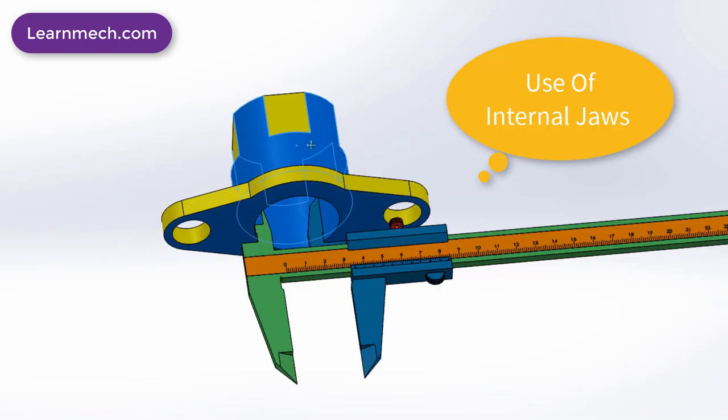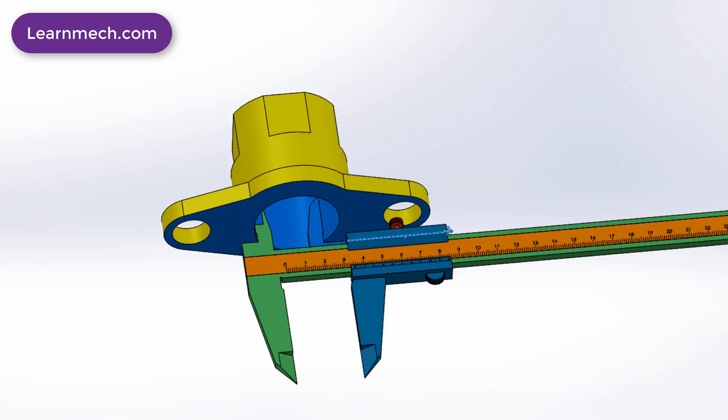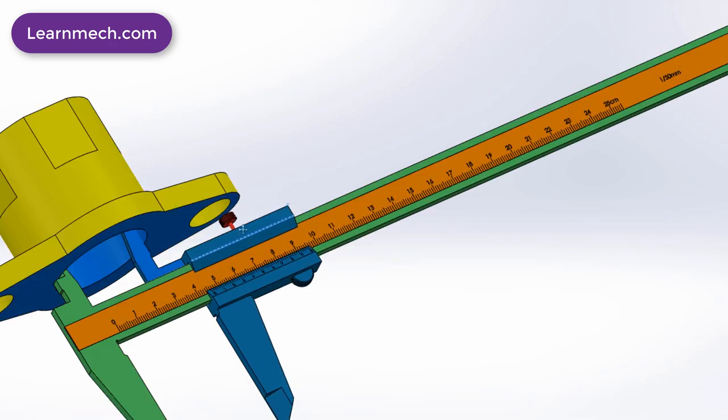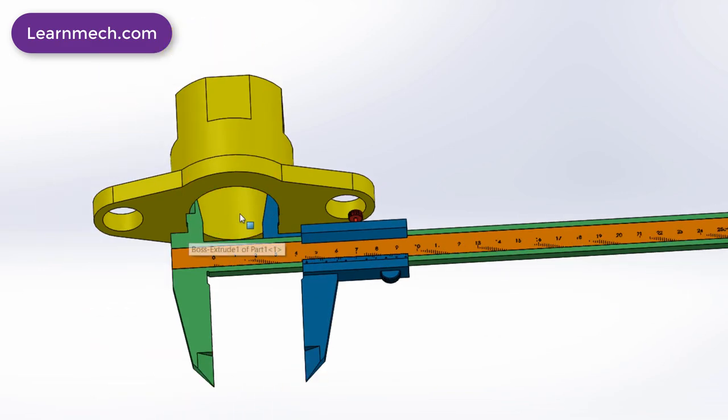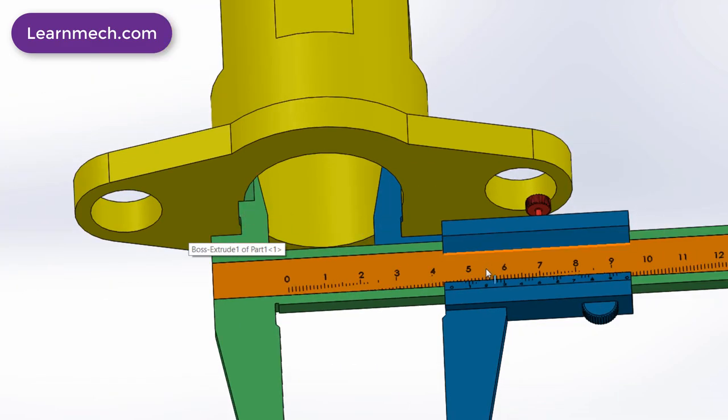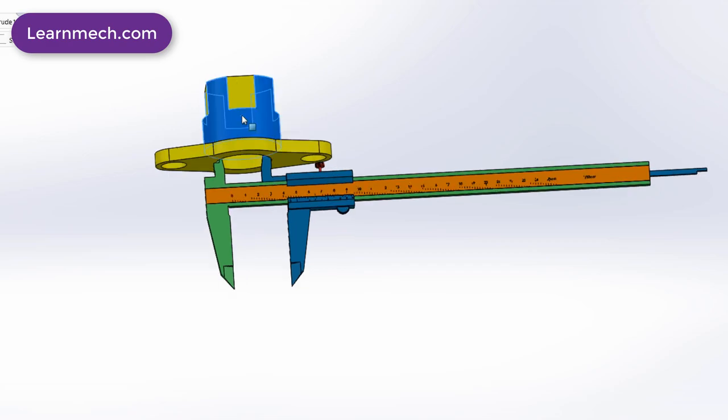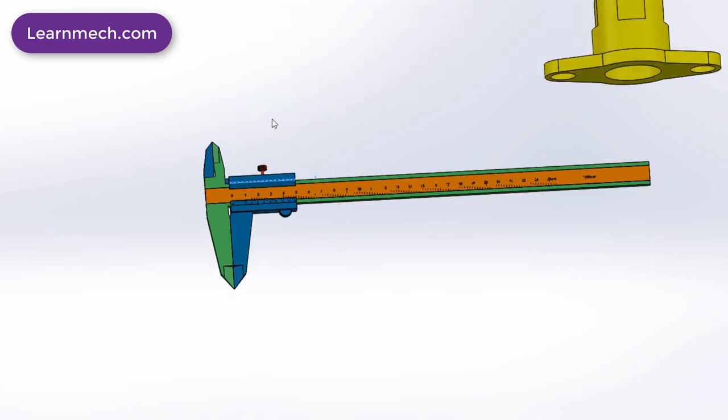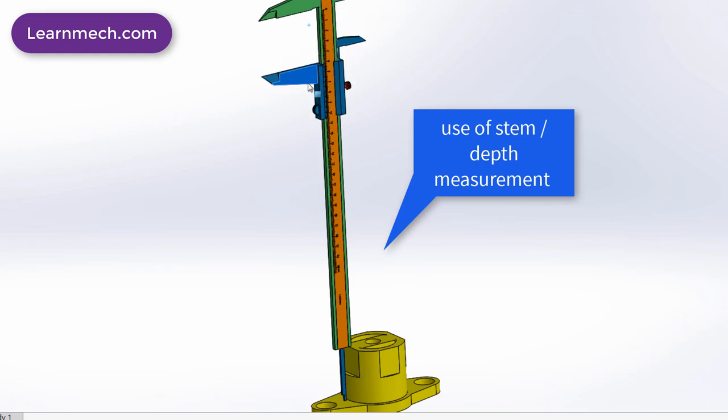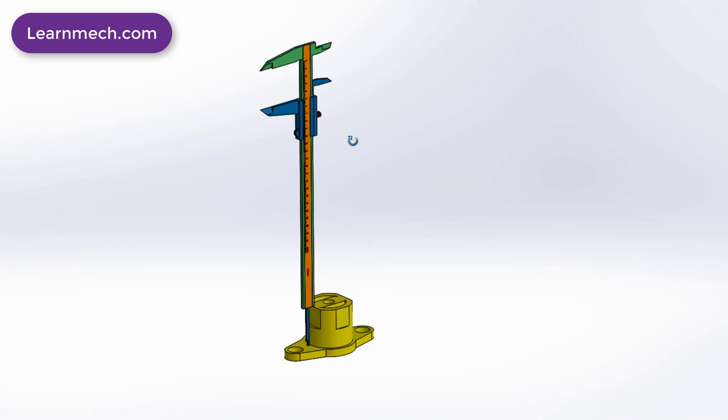Vernier caliper can be used for three types of measurements. First one is outside distances such as the length of an object. Second one is inside distances such as the width of a groove or keyways and diameter of large holes. Third one is depth such as the depth of a hole or the height of steps.